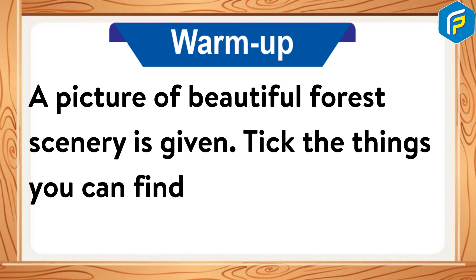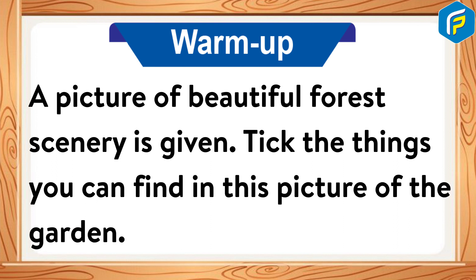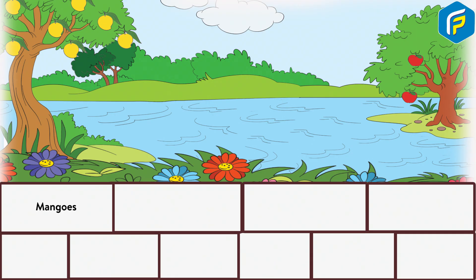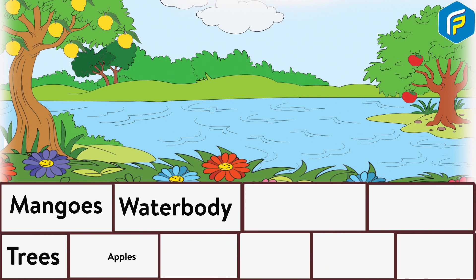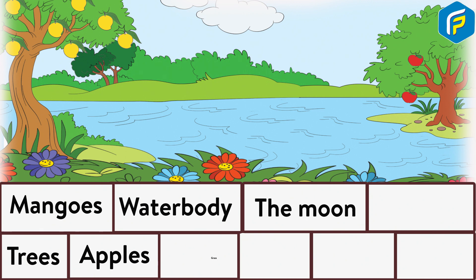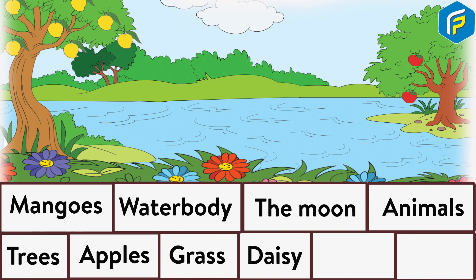Take the things you can find in this picture: mangoes, trees, water body, apples, the moon, grass, animals, daisy, clouds, and birds.